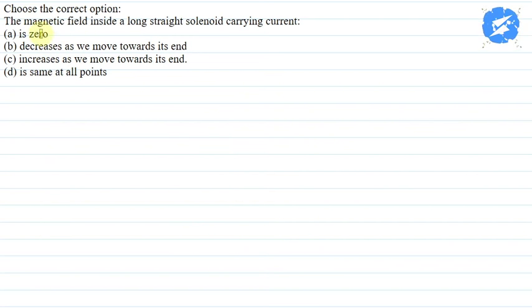Hello everyone, I am your teacher for this question. Our question is: choose the correct option. The magnetic field inside a long straight solenoid carrying current. The given options are: option A is zero, option B decreases as we move towards its end, option C increases as we move towards its end, and option D is same at all points.